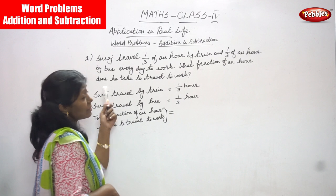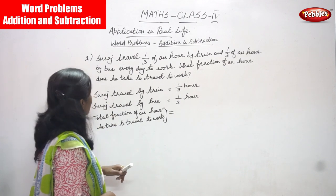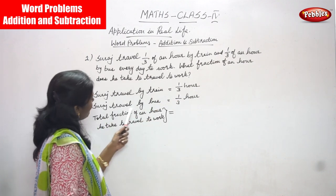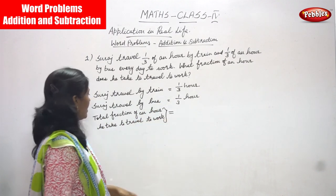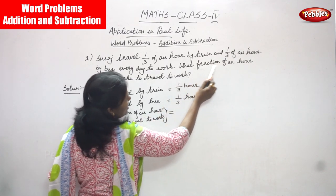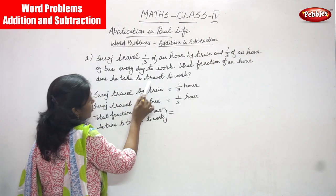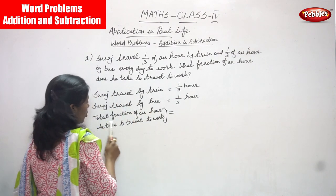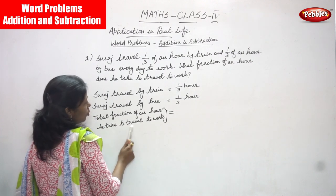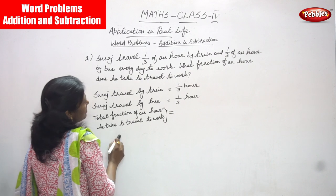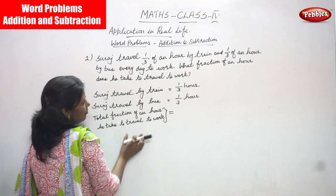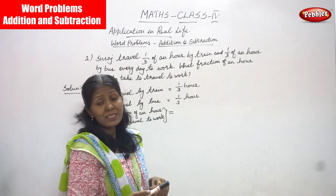First you must understand the meaning of the question. Suraj travels by train — that is 1/3 hour. Suraj travels by bus — that is 1/3 hour. We have to find out the total fraction of an hour he takes to travel to work. That means total — that is what they are asking.